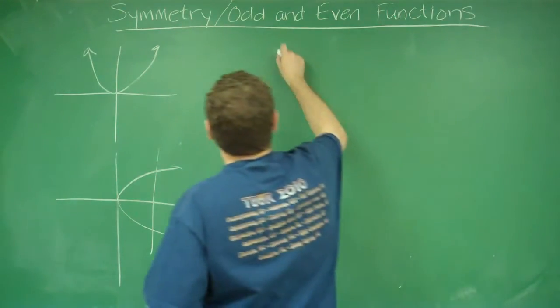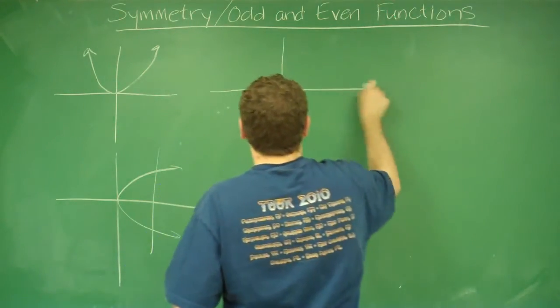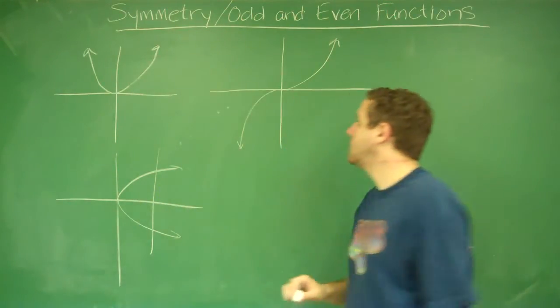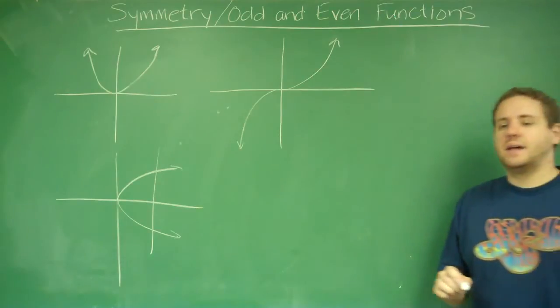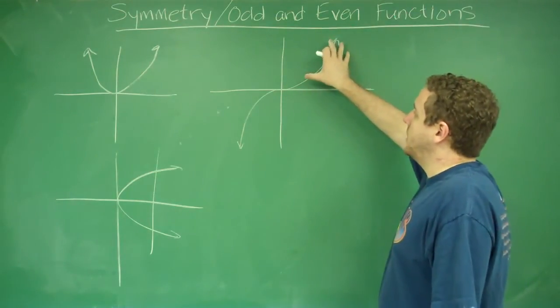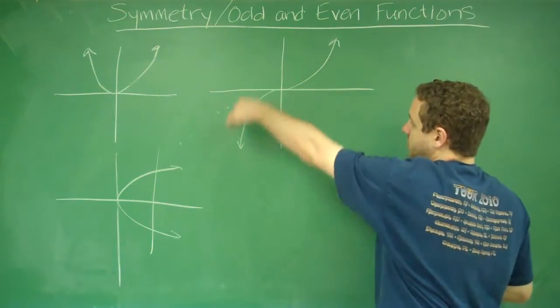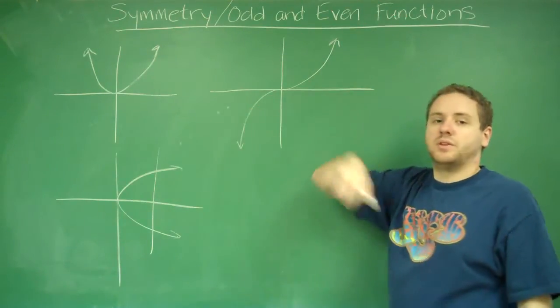And finally, there's symmetric about the origin. That would look something like this. So what that means is that if you took the top part and rotated it 180 degrees around the middle, you would line it up with the other part.